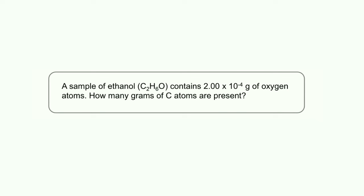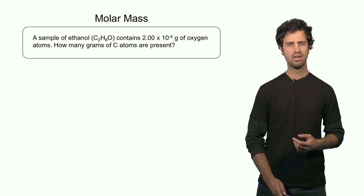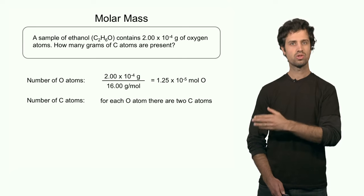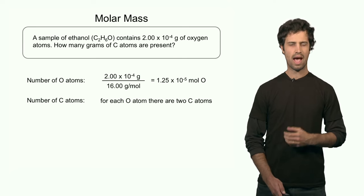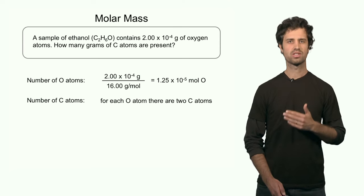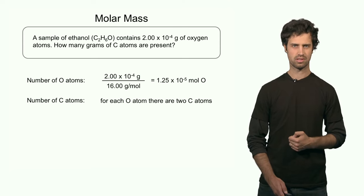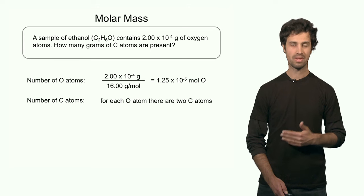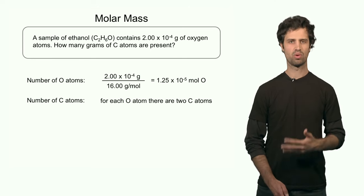Let's do one more example. I want to calculate how many carbon atoms I have in a sample of ethanol, given that the sample contains 2.0 times 10 to the minus 4 grams of oxygen. First, I convert the mass of oxygen in grams to moles: 2.0 times 10 to the minus 4 grams divided by the molar mass of oxygen, 16 grams per mole, equals 1.25 times 10 to the minus 5 moles of oxygen.